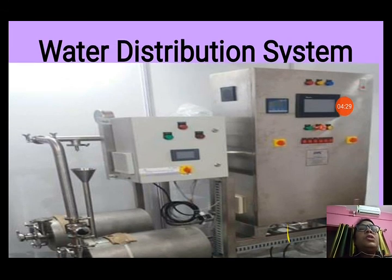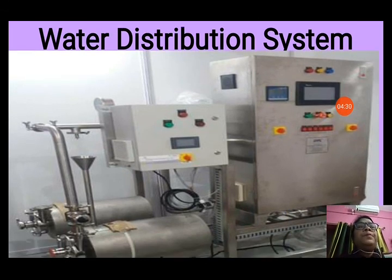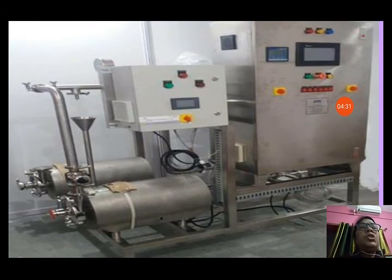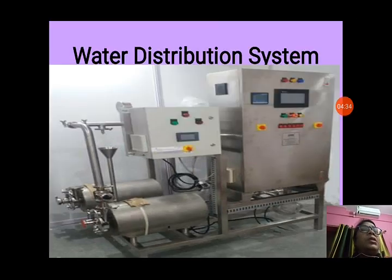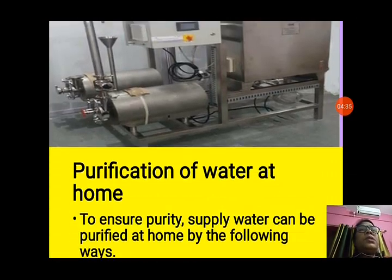So leakages can still let in some impurities and germs in the water. You can see the water distribution system here — from this system, water is sent to the different houses in towns and cities.